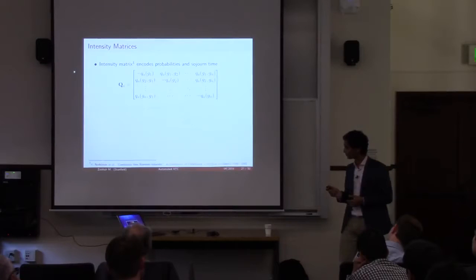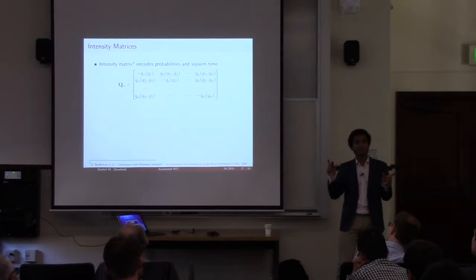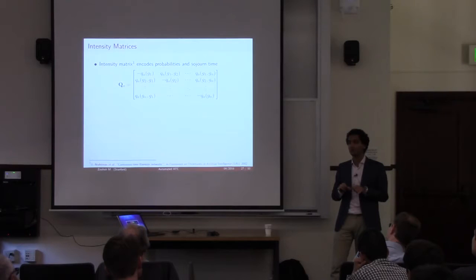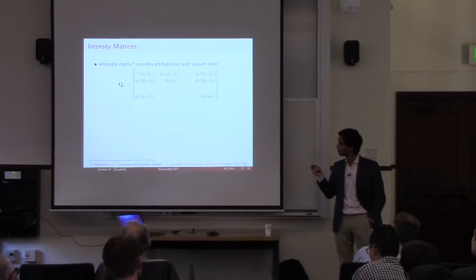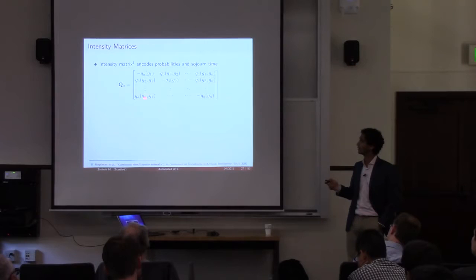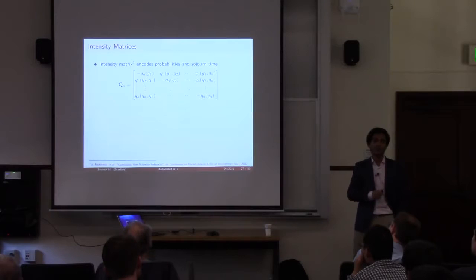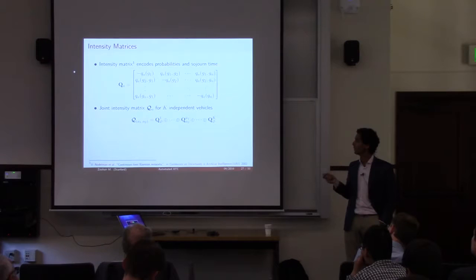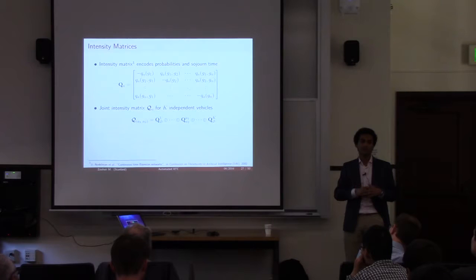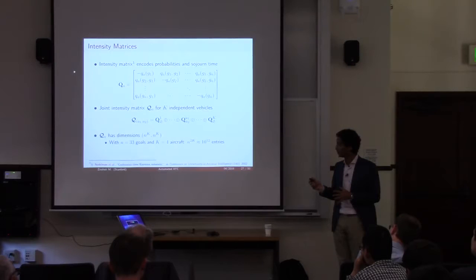For the CTMDP we also need the sojourn times. We use the concept of continuous time Bayesian networks to combine transition probabilities and sojourn times into intensity matrices. The beauty of intensity matrices is they encode both the transition probability and sojourn time in a single matrix — the diagonal stores the sojourn time, and the ratio of off-diagonal to diagonal entries gives the probability of going from one state to another. This describes how one aircraft behaves given a certain action. For all K aircraft, because of the assumption of independent behavior, we can use Kronecker sums to stack them together.